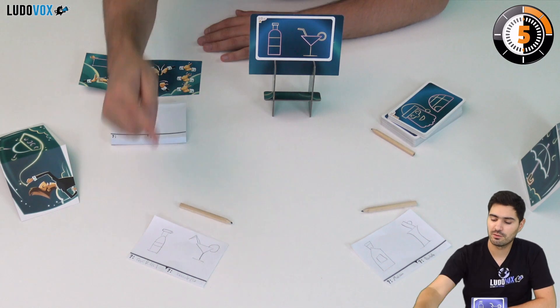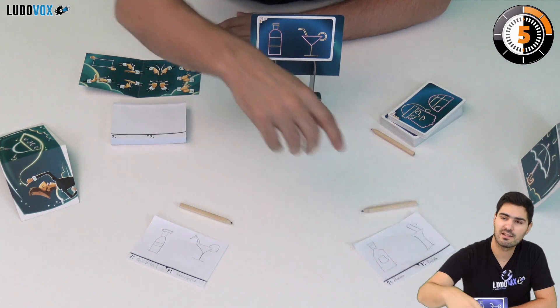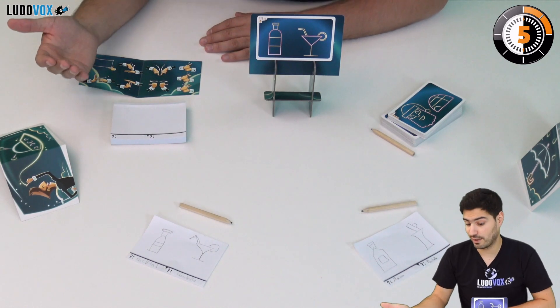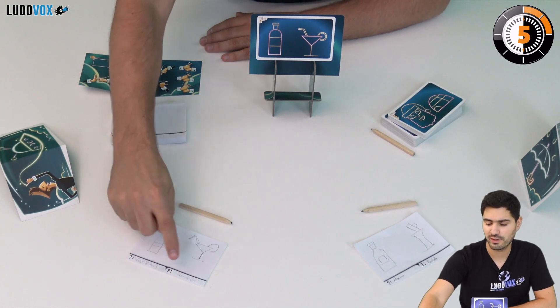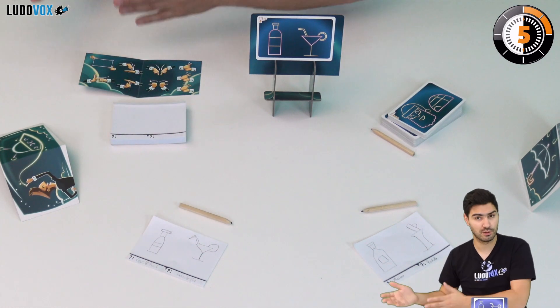Then the players are going to score points if they have guessed correctly what they just drew. Sometimes they will be really close, like cocktail and bottle. This is okay, this is going to score points.